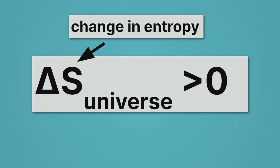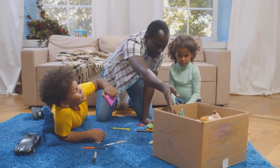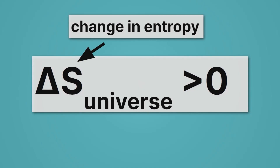All right. Well, with that in mind, let's take a look at an example where entropy seems to be decreasing. Here we have a room that's messy and we're cleaning it up. Isn't that decreasing entropy? It's important to remember that this law — the change in entropy is greater than zero — applies to the universe as a whole.